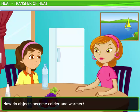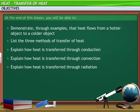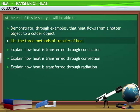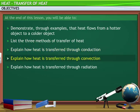Ann has a valid question. Have you also wondered about how objects become colder and warmer? The answer lies in the phenomena of transfer of heat. At the end of this lesson, you will be able to demonstrate through examples that heat flows from a hotter object to a colder object, list the three methods of transfer of heat, explain how heat is transferred through conduction, and explain how heat is transferred through convection.